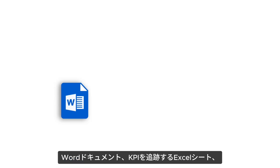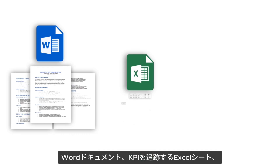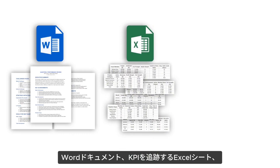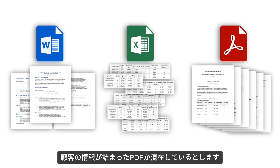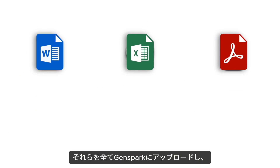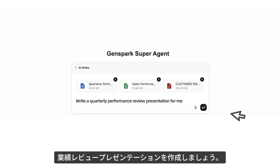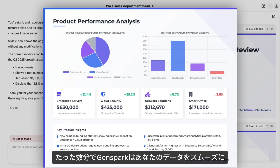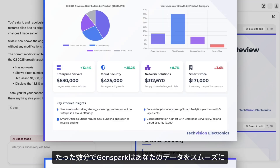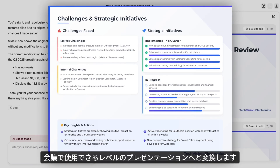Say you have scattered documents — Word reports, Excel sheets tracking KPIs, and PDFs loaded with customer insights. Upload all of them to GenSpark and make a performance review presentation. Within minutes, GenSpark seamlessly transforms your raw data into a boardroom-ready deck.